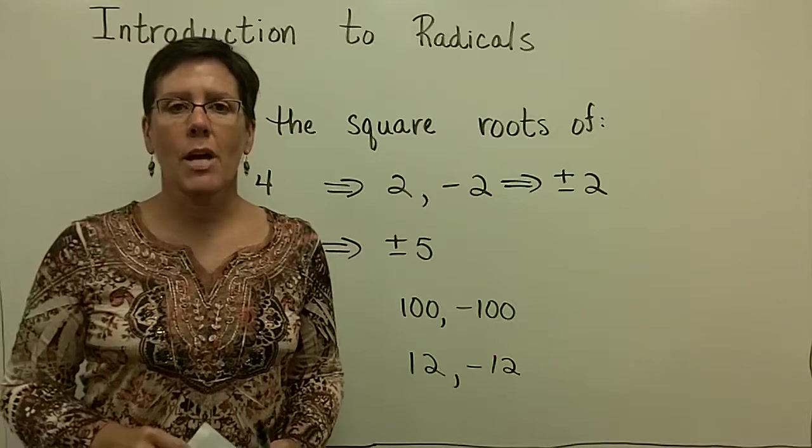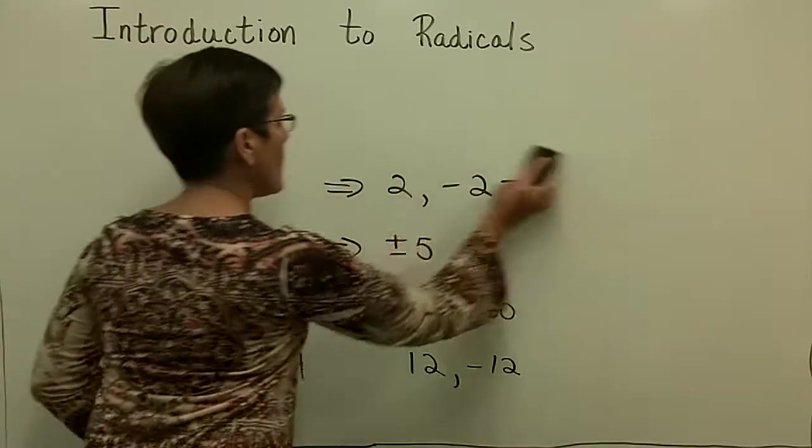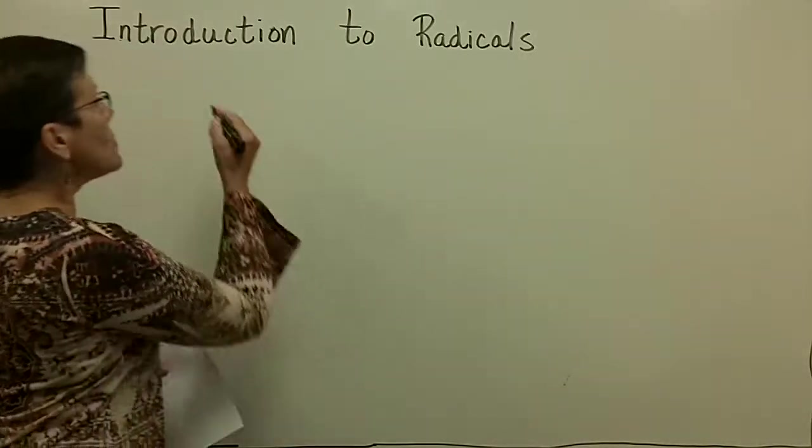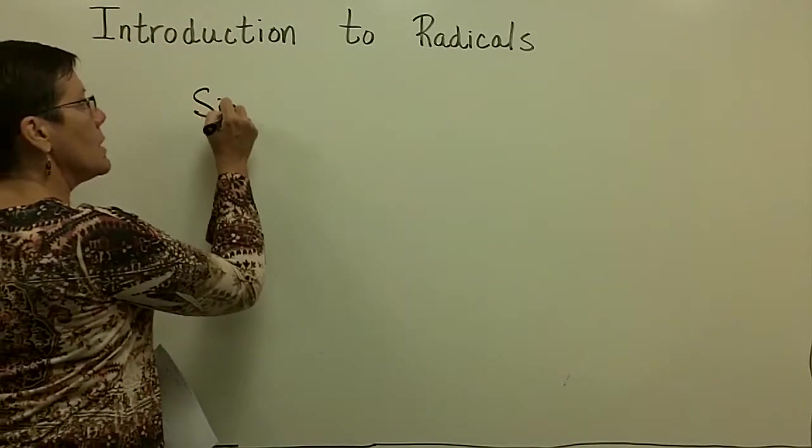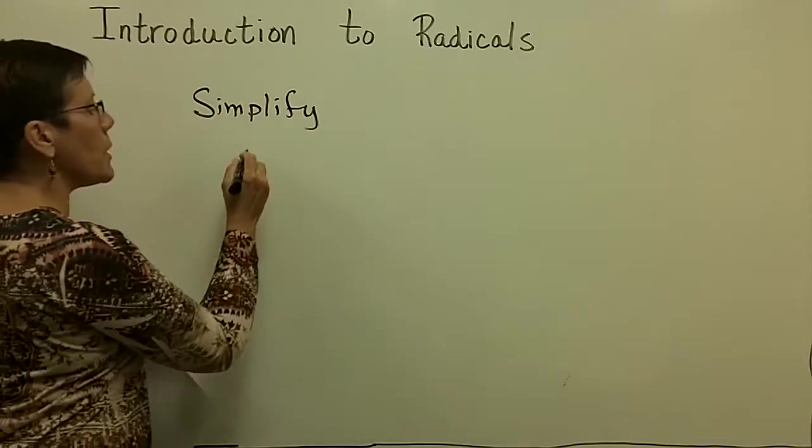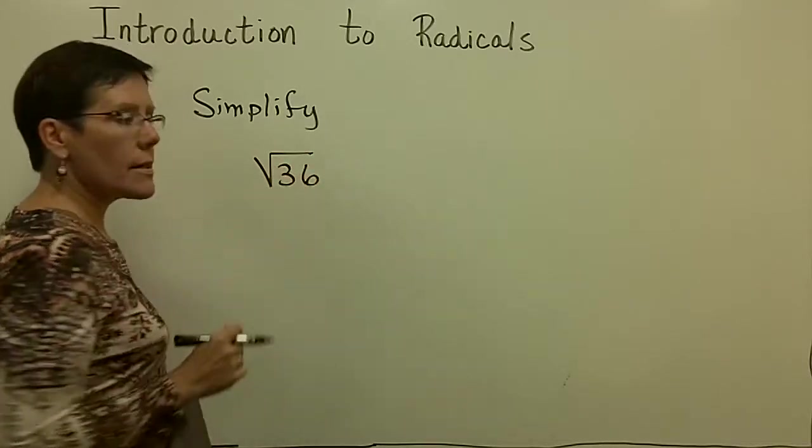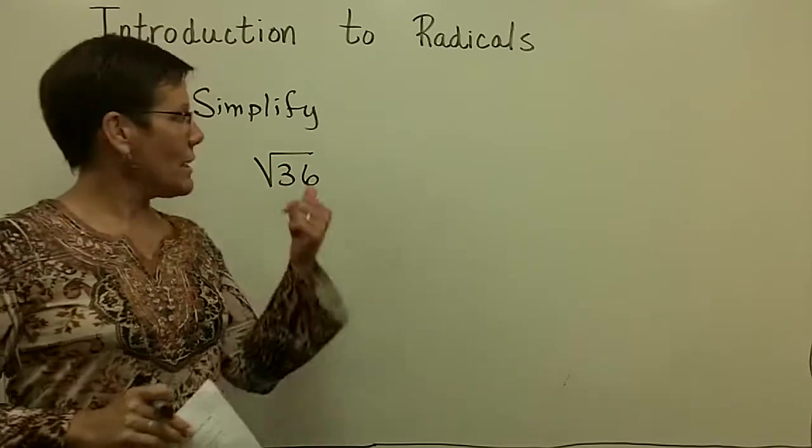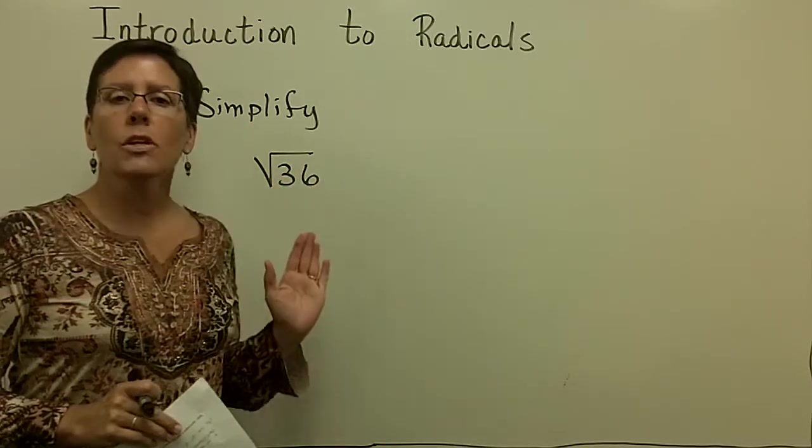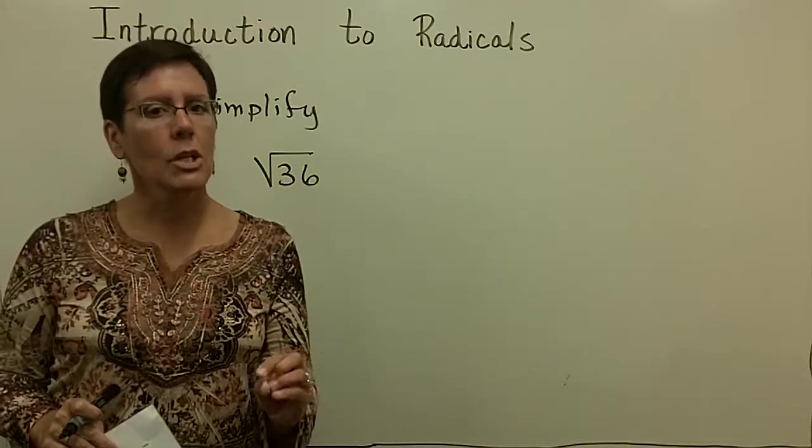It's a little confusing sometimes when we go and change the directions and we say to you, we ask you to simplify something that is under a square root symbol. So for example, if I ask you to simplify the square root of 36, what I'm asking, so the directions here say, give me the value of this.